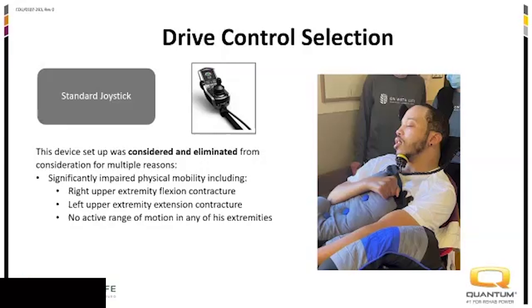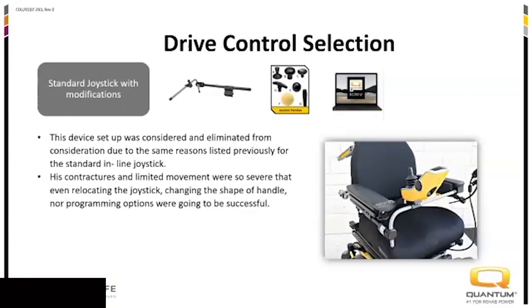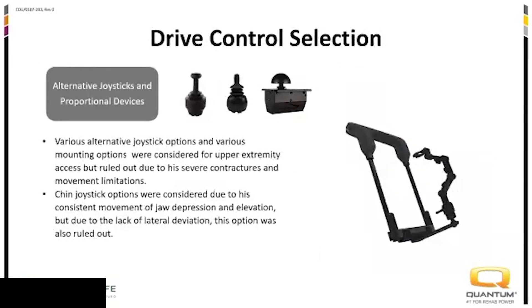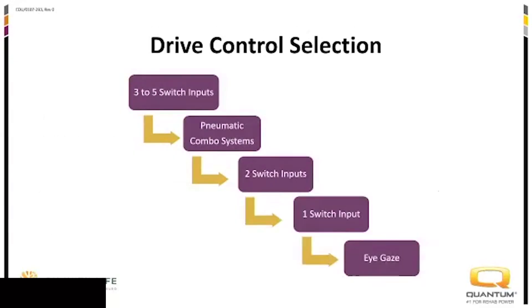He couldn't lift an eyebrow — that tone and spasticity really set in everywhere except for that jaw. His upper extremity contractures and his legs were also contracted in extension with toes pointed. Because of those severe deficits, we weren't even able to move a joystick somewhere else. We considered putting it up at the chin, but he didn't even have the chin-jaw movement to use a chin control. He really could only do one thing, so we had to move on to switches.